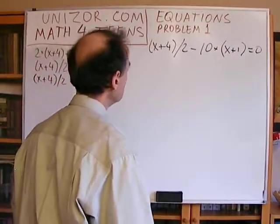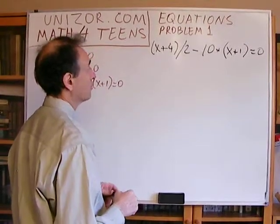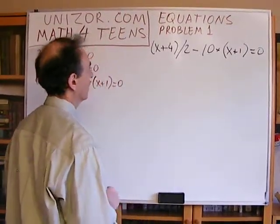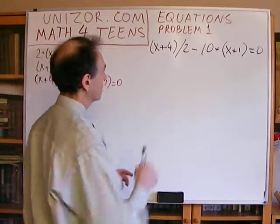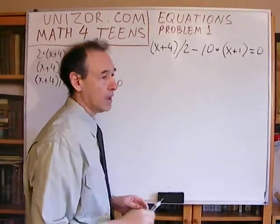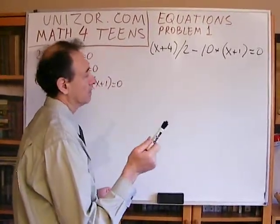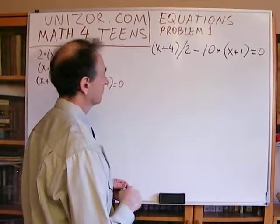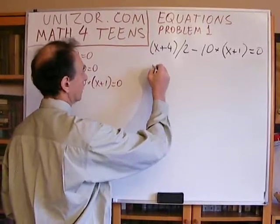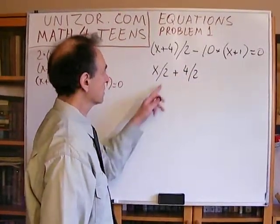There are many ways to solve this equation. Probably the best way is first to simplify the left part. If we divide x plus 4 by 2 — separately x and 4 — we use the distributive law of multiplication and addition. In this case it's division. The distributive law says this equals x divided by 2 plus 4 divided by 2. We have to understand that simple rules have their theoretical foundation.